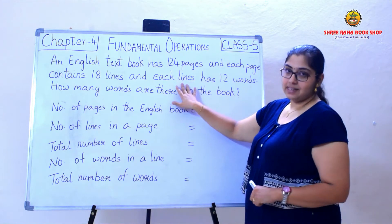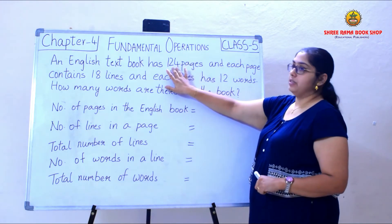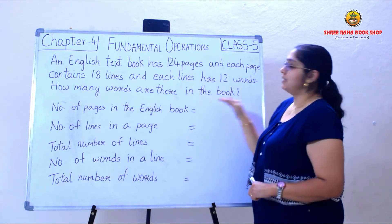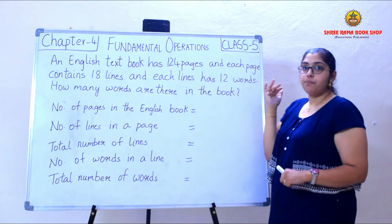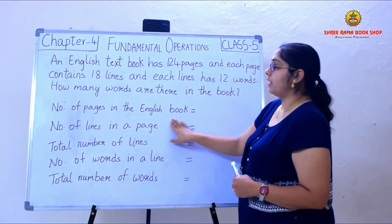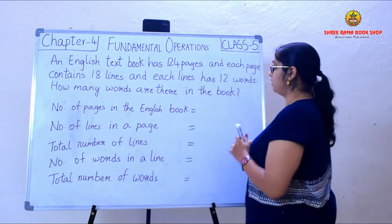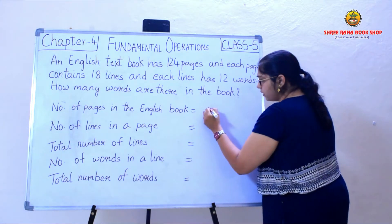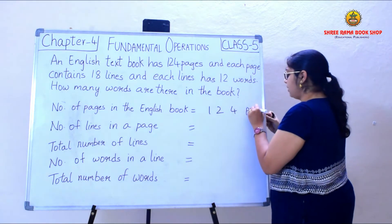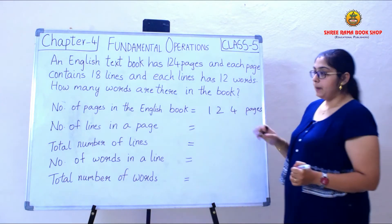So what are they asking us? They are asking us: in 124 pages, in all the lines put together, how many words are there in the book? First, the number of pages in the English book is 124 pages.